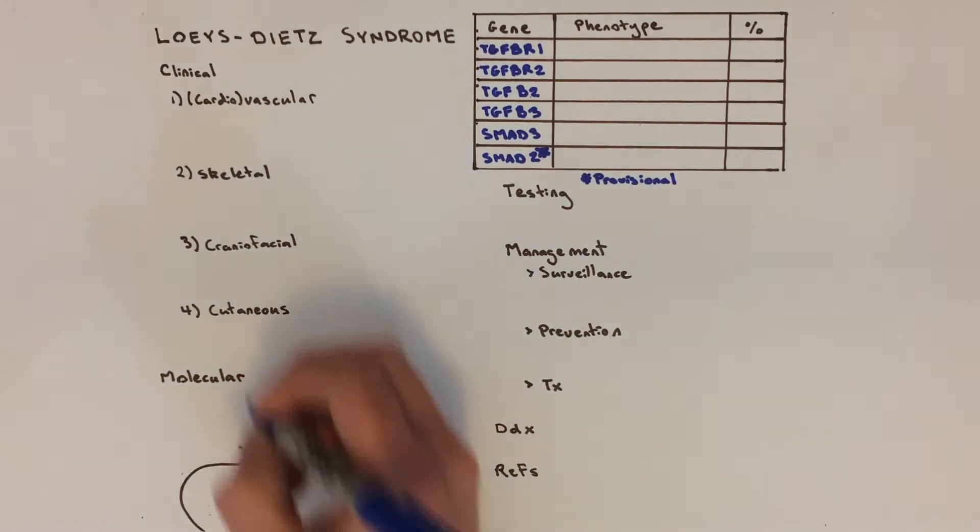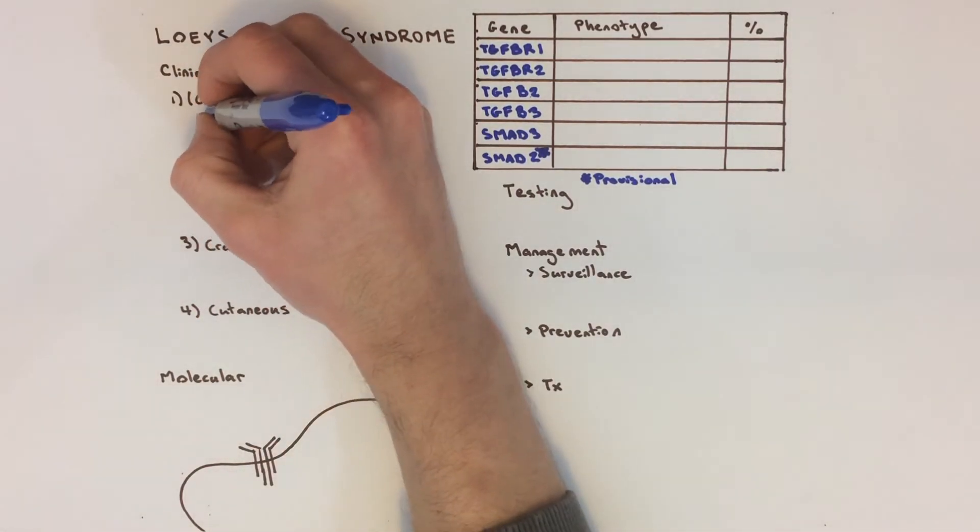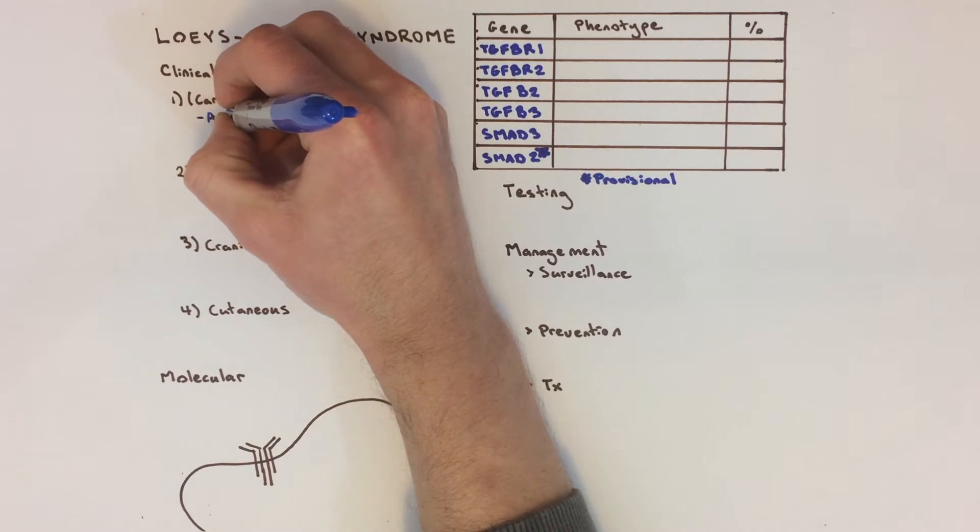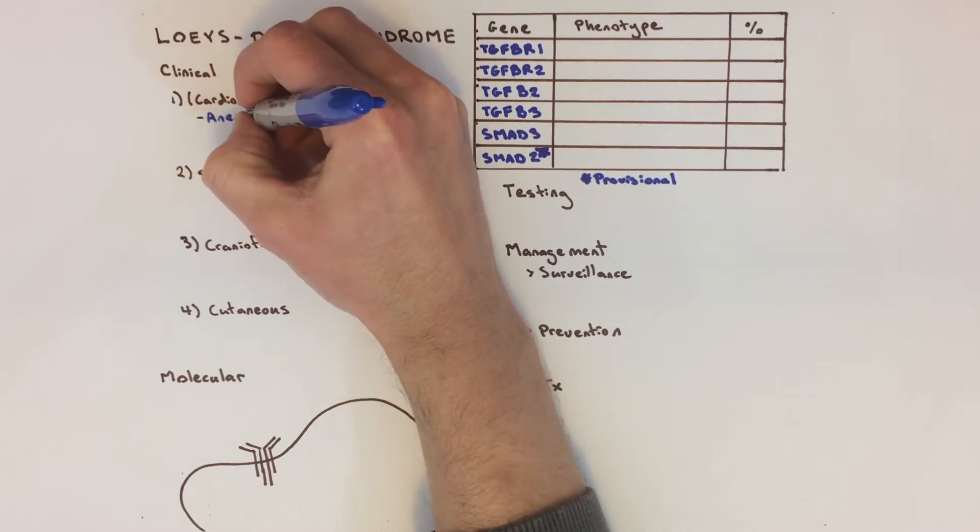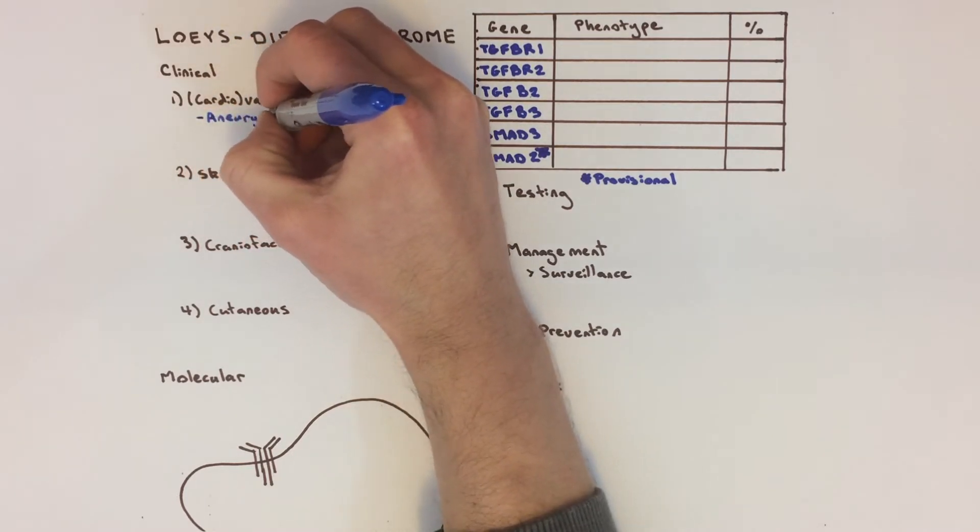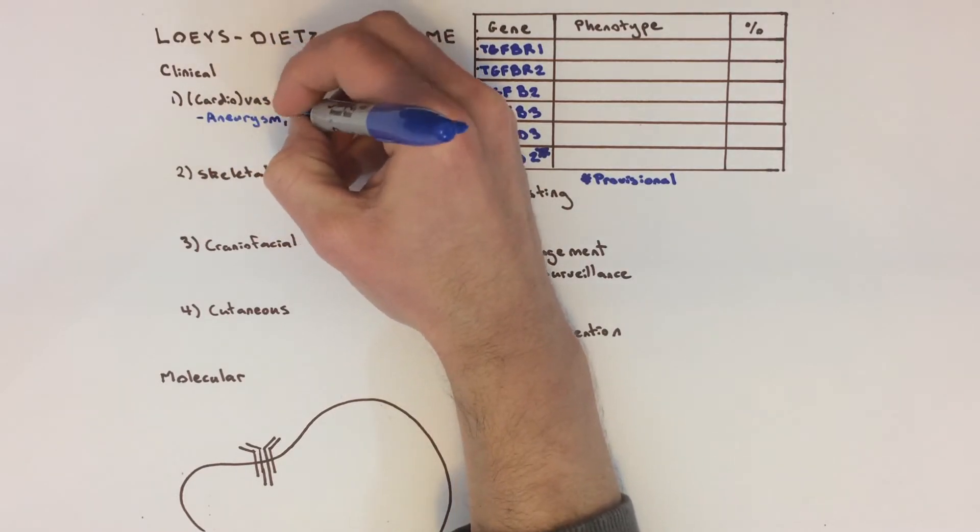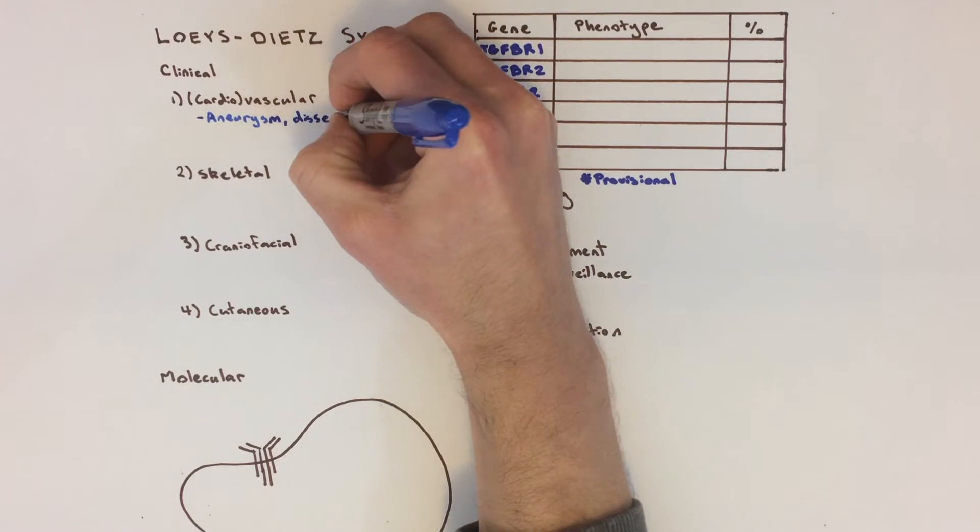Arteries in patients with Loeys-Dietz syndrome can become enlarged, forming aneurysms. Their walls can tear, called a dissection, and they can rupture, which can lead to fatal bleeding. The most commonly involved artery is the aorta, which is the big blood vessel that blood goes through on its way out of the heart and on its way to the rest of the body.